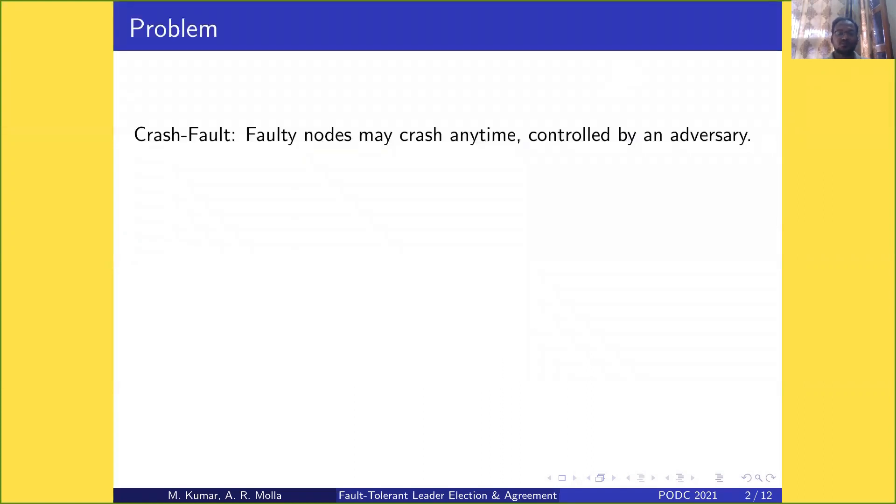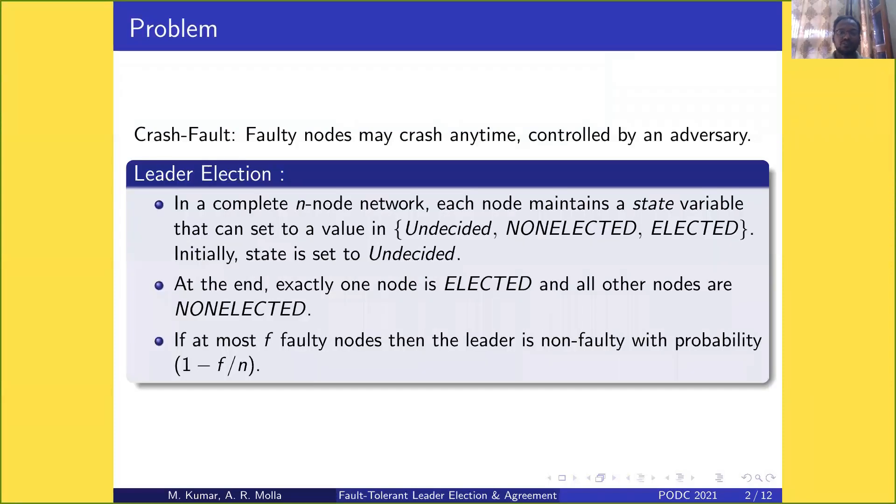The problem is in the crash-fault model. Faulty nodes may crash anytime, controlled by an adversary. In leader election in a complete n-node network, each node maintains a state variable that can be set to undecided, non-elected, or elected. Initially, it is undecided.